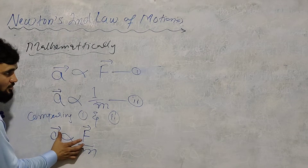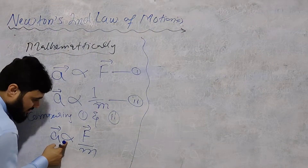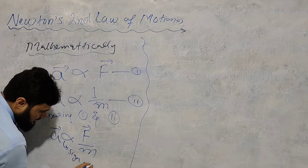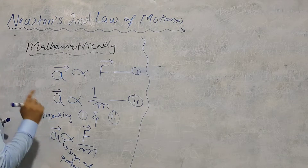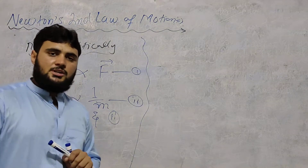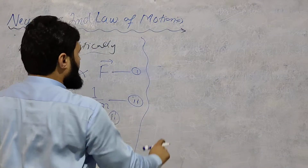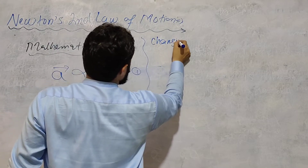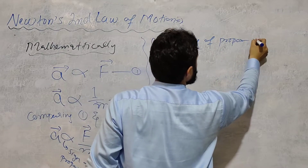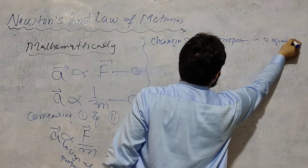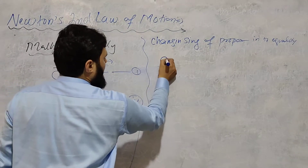Now combining the two proportionalities using the sign of proportionality. We change the sign of proportionality into equality by introducing a constant. The sign of proportionality is changed to equality.